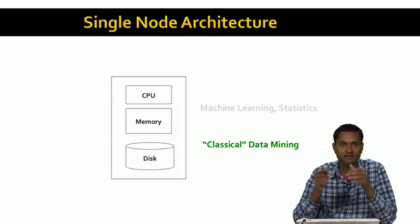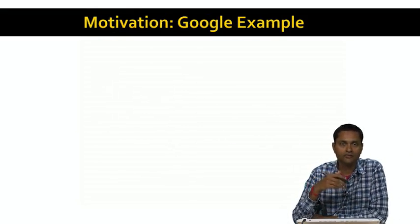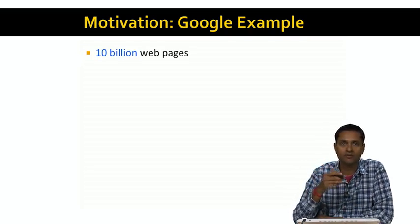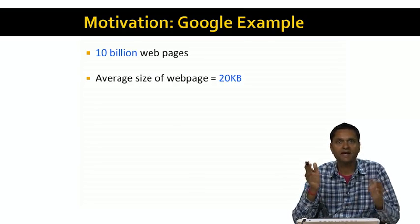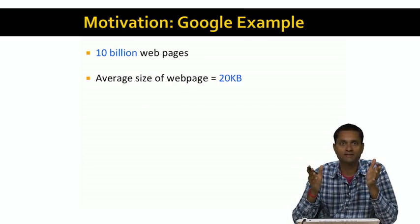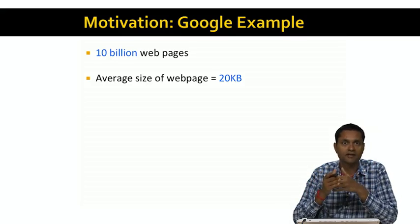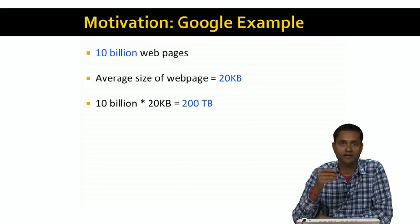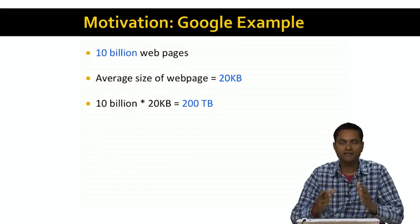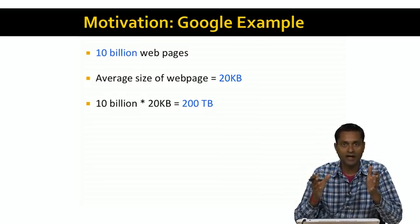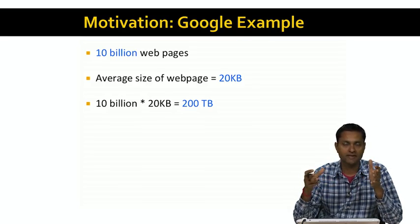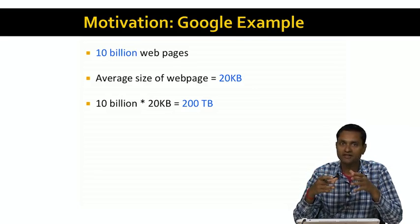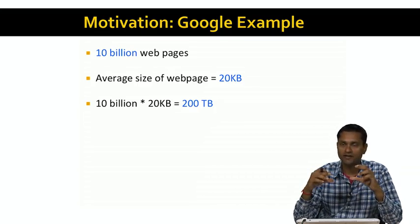But sometimes even this is not sufficient. Think about Google crawling and indexing the web. Let's say Google has crawled 10 billion web pages, and the average size of a web page is 20 kilobytes — these are representative numbers from real life. If you take 10 billion web pages each of 20 kilobytes, you have a total data set size of 200 terabytes. Now, when you have 200 terabytes and all this data is stored in a single disk that has to be read into a CPU, the fundamental limitation is the bandwidth between the disk and the CPU.